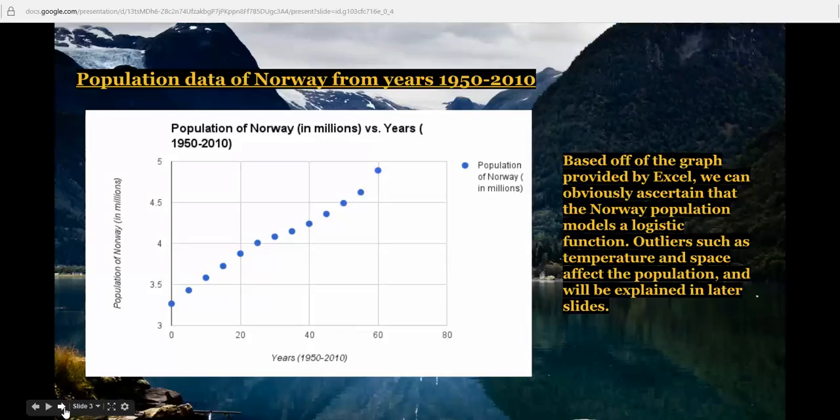This is a graph of the data that we just received of Norway, and it models a logistic growth model very well instead of an exponential growth model. An exponential growth model is like a hockey stick model where it just dramatically goes up, like the world population did after about the 1700s. But Norway does not have that growth, and I'll explain in later slides why it doesn't.